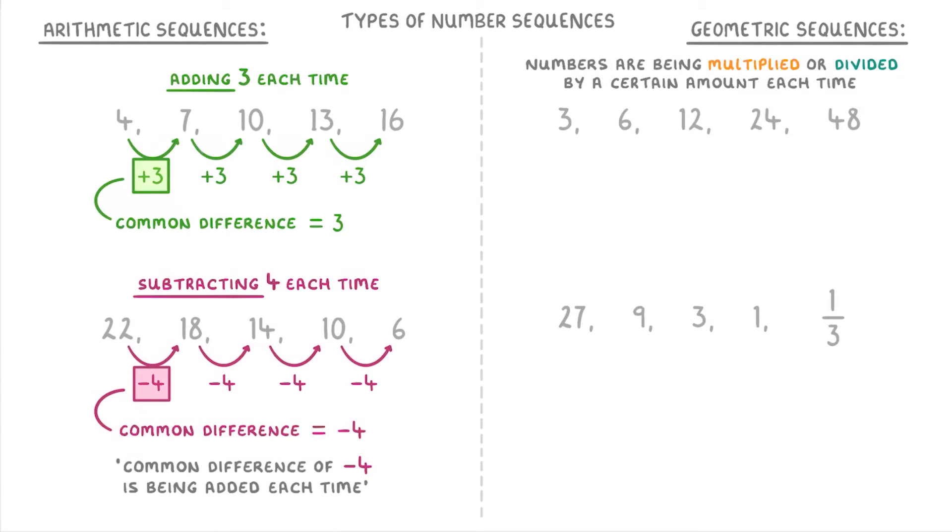For example, if we look at this first one we can see that to get from 3 to 6 we have to add 3, but to get from 6 to 12 we have to add 6, and to get to 24 we have to add 12. This means that the pattern can't be about adding or subtracting anything each time, so it's not an arithmetic sequence.